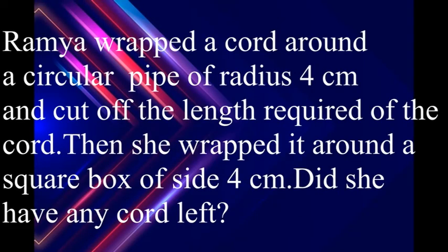Moving to the next question. Remyang wrapped a cord around a circular pipe of radius 4 cm and cut off the length required. Then she wrapped it around a square box of side 4 cm. Did she have any cord left? The question states: take pi equal to 3.14.